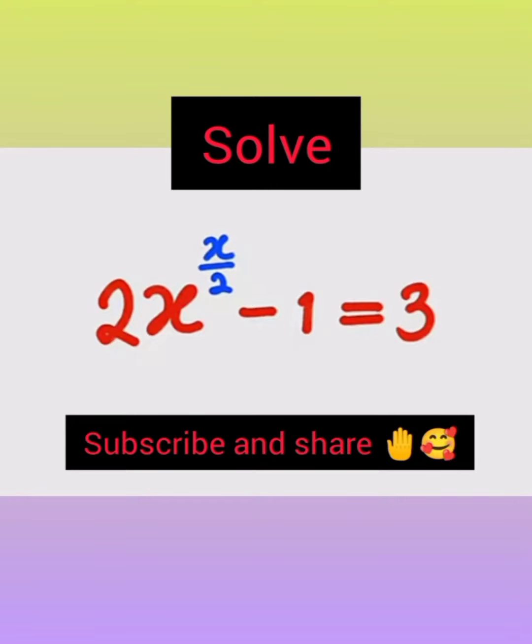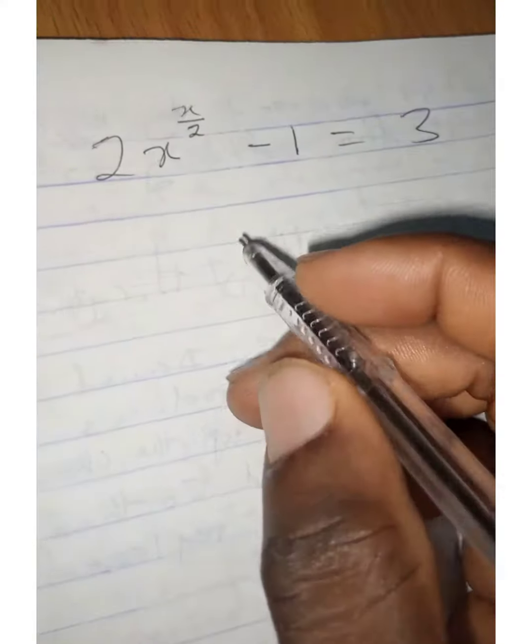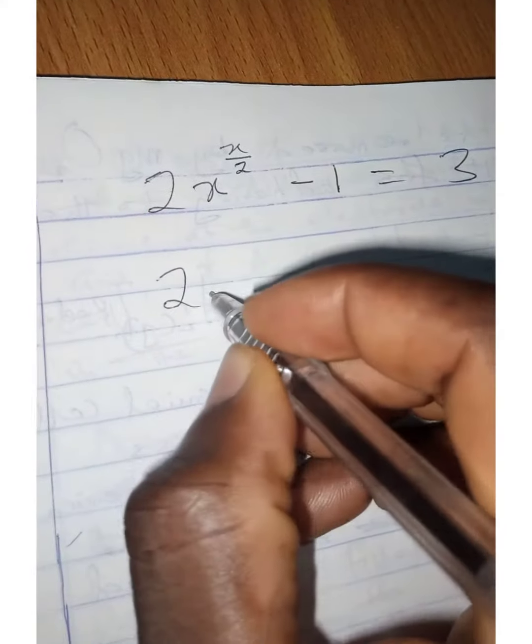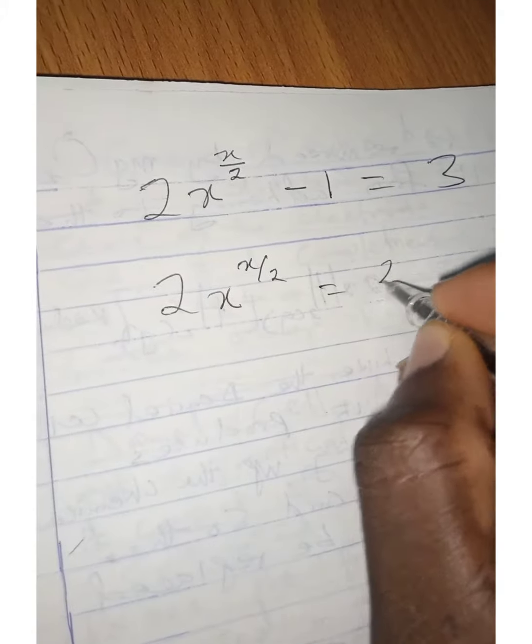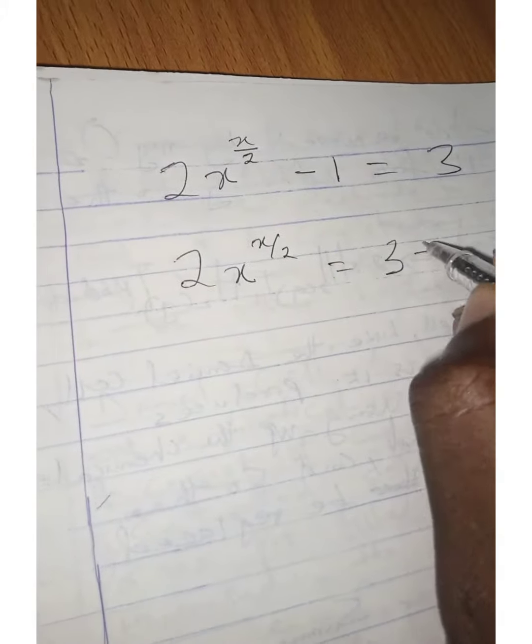Solve 2x raised to the power x divided by 2 minus 1 equals 3. Rearranging, we have 2x raised to the power x divided by 2 equals 3 plus 1.